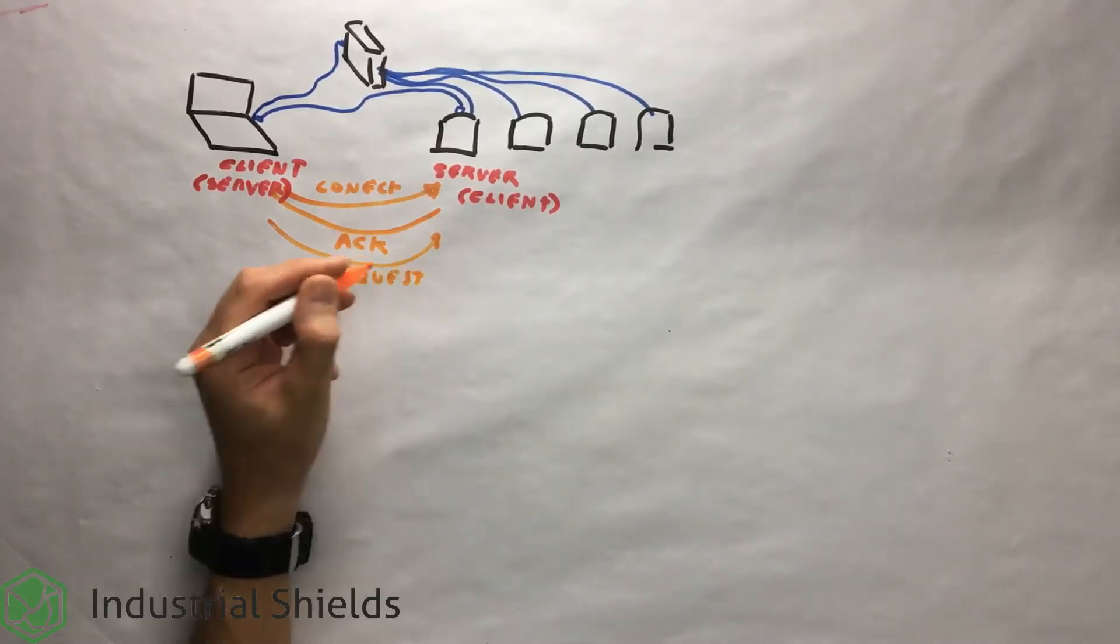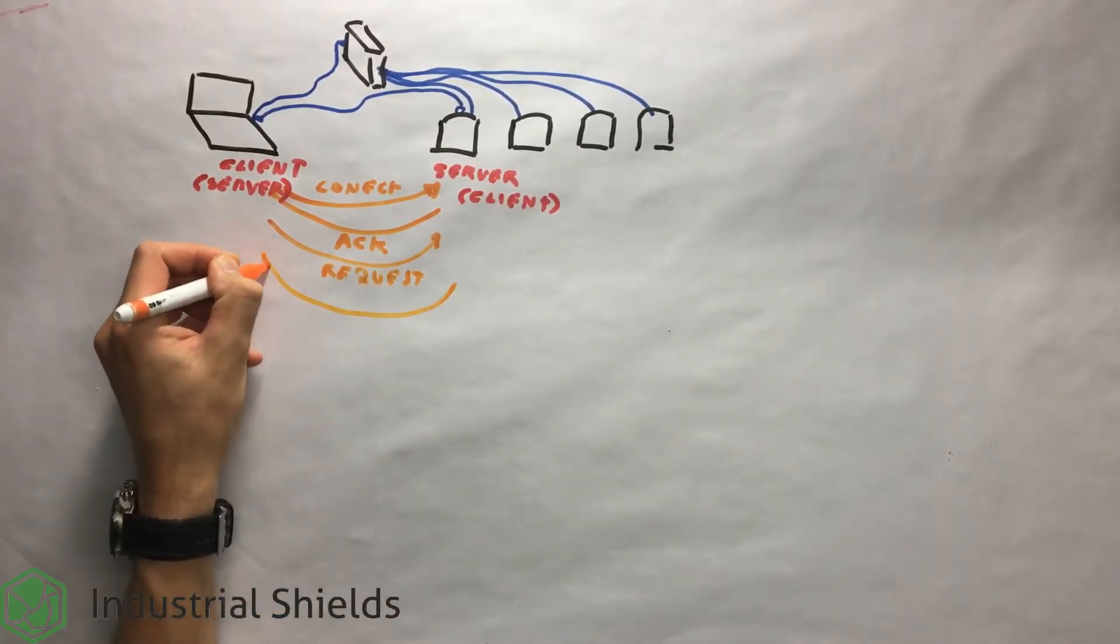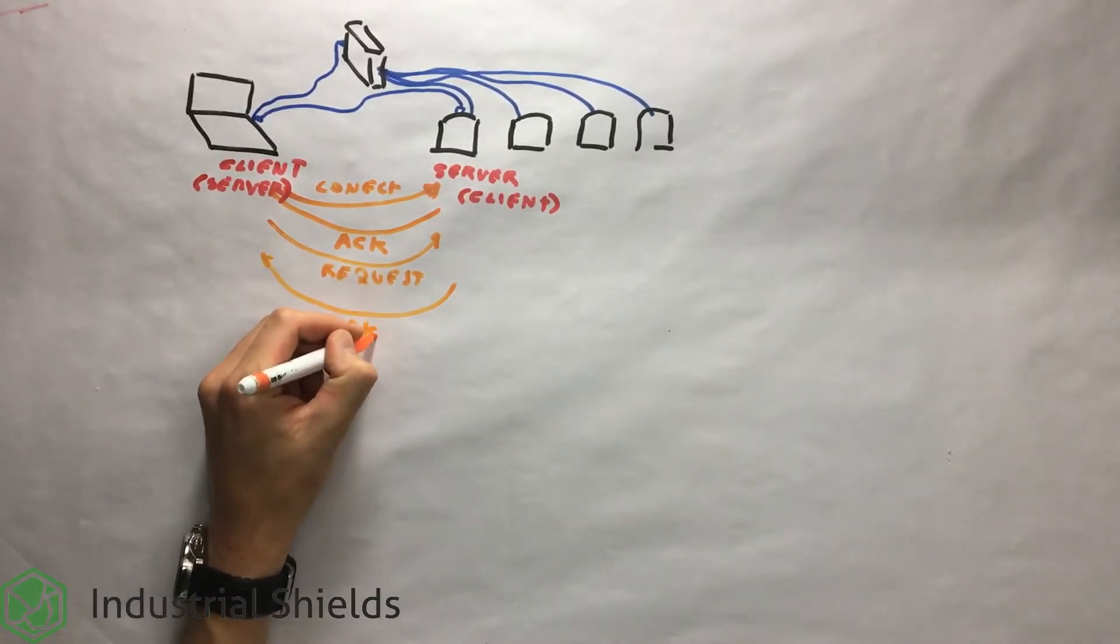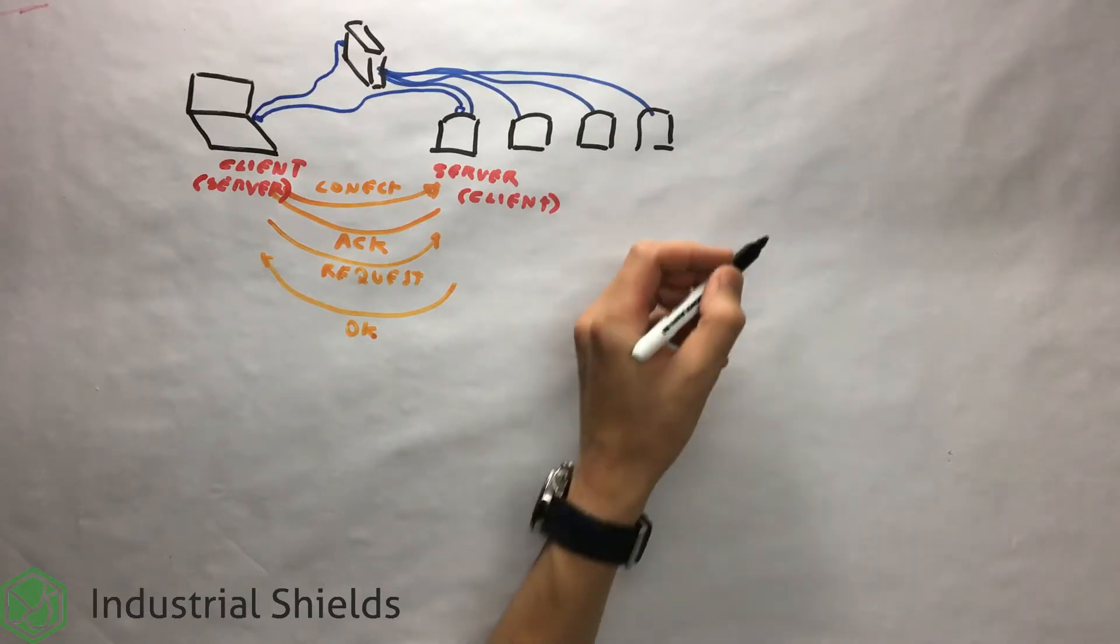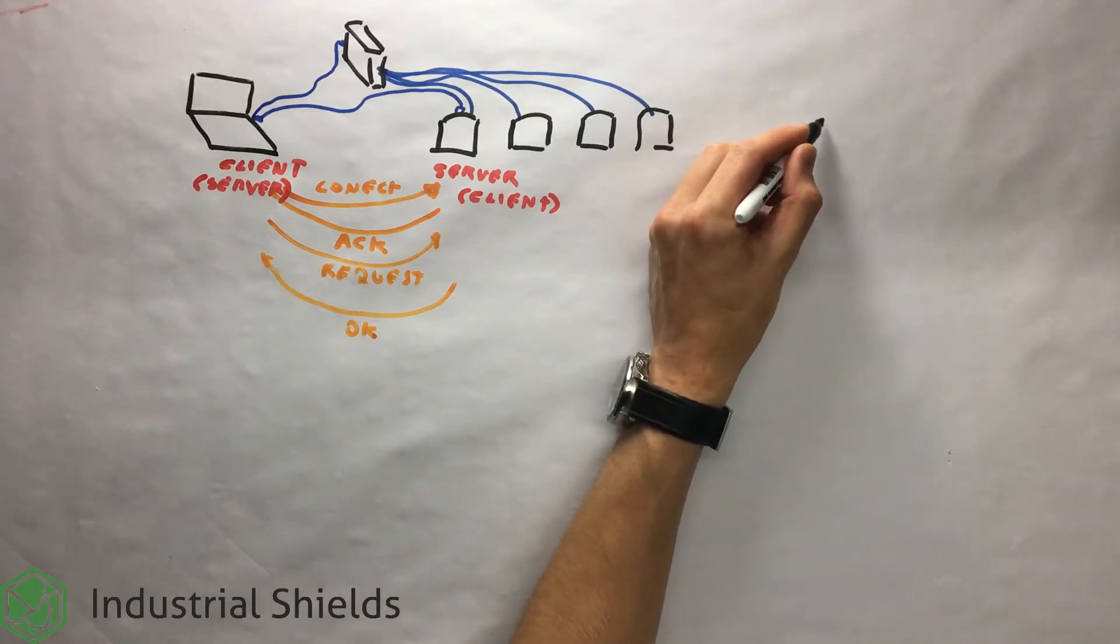Many programs within a network of computers can use TCP to create connections with each other through which a data stream can be sent. The protocol guarantees that the data will be delivered to its destination without errors and in the same order that was transmitted.